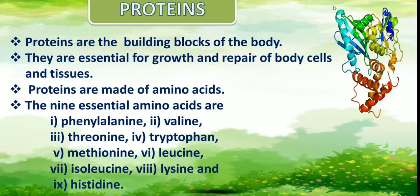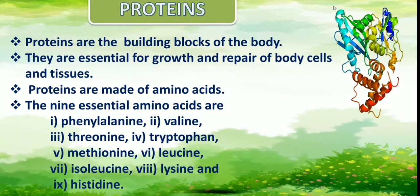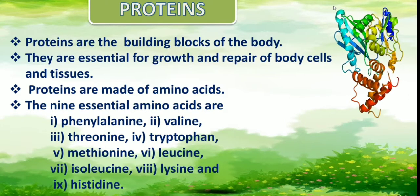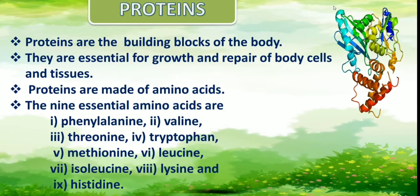You need a variety of amino acids for your body to function properly. The essential amino acids are phenylalanine, valine, threonine, tryptophan, methionine, leucine, isoleucine, lysine and histidine. These are the 9 essential amino acids which cannot be synthesized by our body — we have to obtain them through foods.